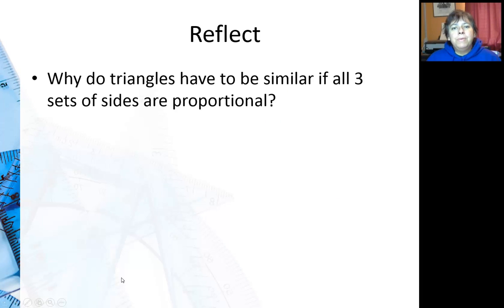So for further reflection, why do triangles have to be similar if all three sets of sides are proportional? Well remember if you're applying a scale factor to create all three sides, which means they're proportional, that's what we do when we create similar triangles and polygons.